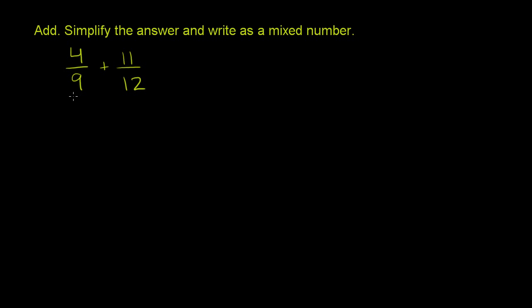So what we have to do is find a number that both 9 and 12 will divide into, and that will be our common denominator. And you'll see why both 9 and 12 have to divide into it.